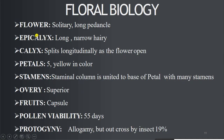Floral biology: flowers are solitary on long peduncles; epicalyx is long, narrow, and hairy; calyx splits longitudinally as the flower opens; petals are five, yellow in color; staminal column is united to the base of petals with many stamens; ovary is superior; fruit type is capsule; pollen viability is up to 55 days; pollination is allogamy but outcrossed by insects at 19%.